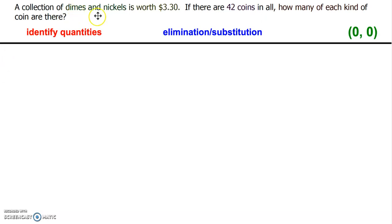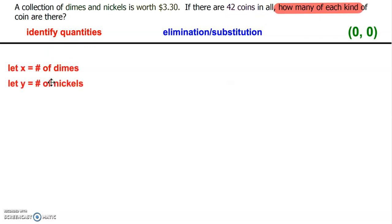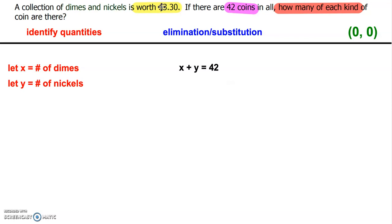In this example, we have a collection of dimes and nickels worth a total of $3.30. If there are 42 coins in all, how many of each kind are there? We want to know the number of dimes and the number of nickels. We know the total is 42 coins, so however many dimes plus however many nickels equals 42. Then we bring in background knowledge: a dime is worth 10 cents and a nickel is worth 5 cents. So 10 times the number of dimes plus 5 times the number of nickels equals 330 cents, totaling $3.30.